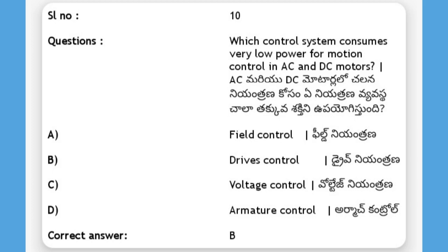Which control system consumes very low power for motion control in AC and DC motors? The answer is B, drive control method.